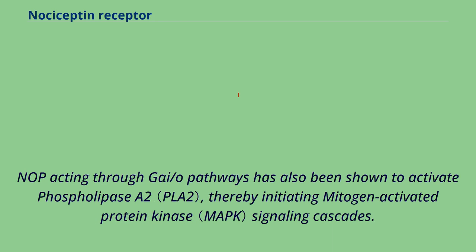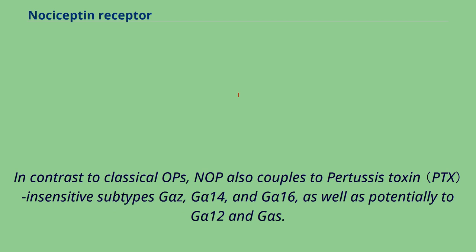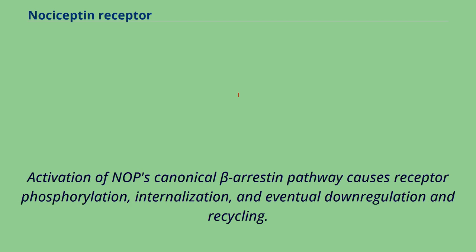NOP acting through G-alpha-IO pathways has also been shown to activate phospholipase A2, thereby initiating mitogen-activated protein kinase signaling cascades. In contrast to classical OPs, NOP also couples to pertussis toxin in sensitive subtypes G-alpha-Z, G-alpha-14, and G-alpha-16, as well as potentially to G-alpha-12 and G-alpha-IS. Activation of NOP's canonical beta-arrestin pathway causes receptor phosphorylation, internalization, and eventual downregulation and recycling.